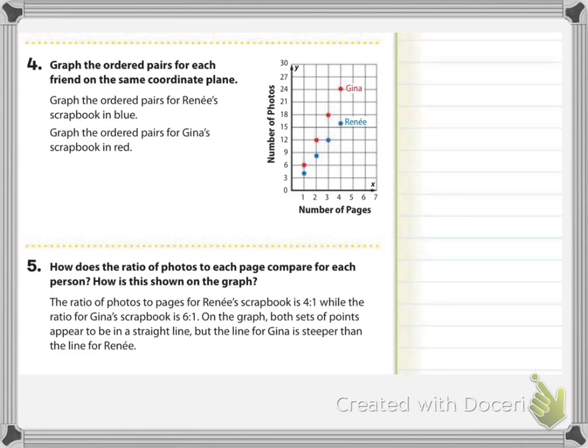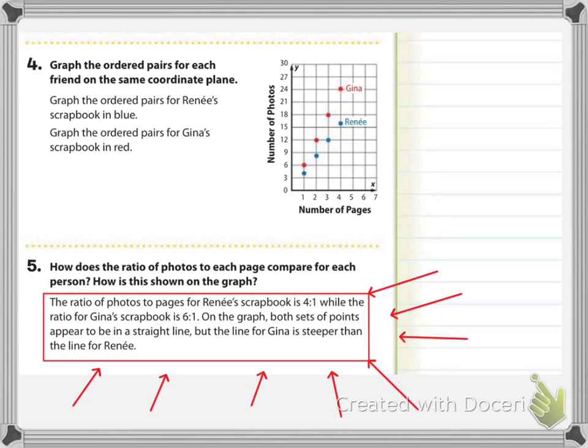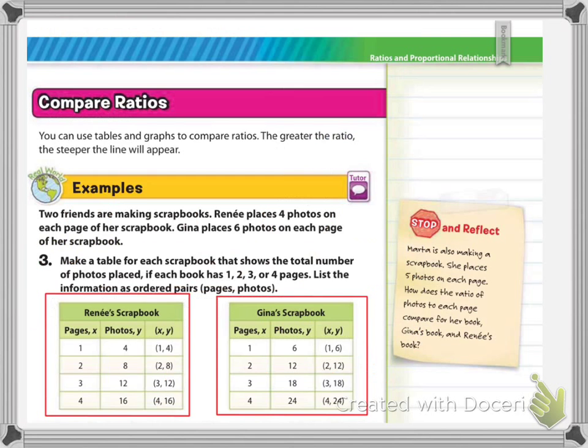So they've done that. Now number five says, how does the ratio of photos to each page compare for each person? How is this shown on the graph? Now they've got the answer for you right over here. And you can see it's like a small little mini paragraph. So it is important that you do understand how to read this and to understand that when you are asked to compare two different things, you're able to use, you know, similar words and verbiage. So it says here the ratio of photos to pages for Renee's scrapbook is four to one, while the ratio for Gina's scrapbook is six to one. Now they gave that part, if you remember, back in the actual word problem situation. So on my thing here, it's on my previous screen, but you'll see here, they gave it to you right over here. Four photos on each page for Renee, six photos on each page for Gina. So you're getting the ratio of four to one and six to one.